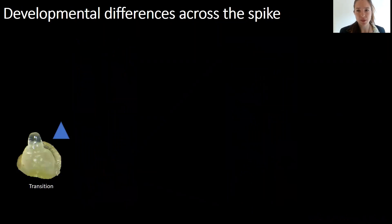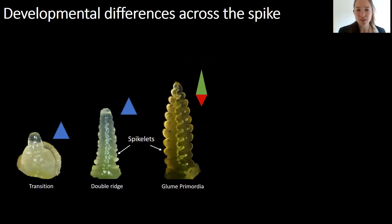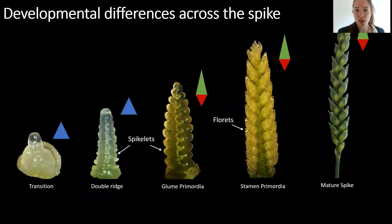Looking at the development of the spike, we can see that upon floral transition, spikelet primordia are developed and they are actually biggest at the base. However, in the glume primordium stage where the spikelets start to grow out and differentiate, the basal spikelets are already falling behind. And their development throughout up to maturity follows this trend where basal spikelets are just falling behind.